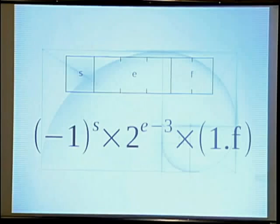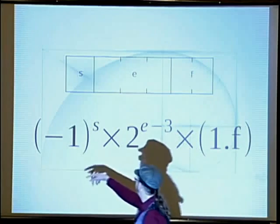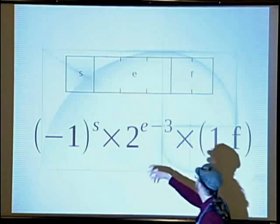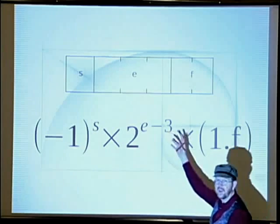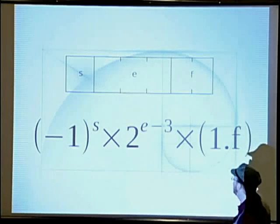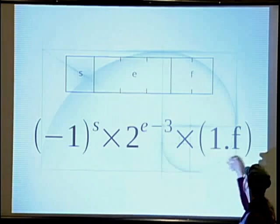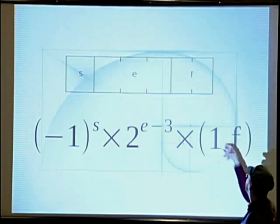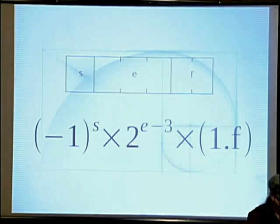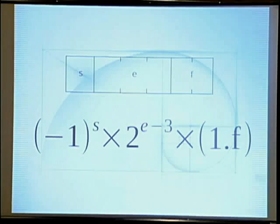The value of this is given by this equation, minus one to the sign bit, or positive or negative. You bias the exponent by, in this case, three. So half of the numbers are less than one. And you take, I mean, this is likely to be a one. And then the fractional part comes from the two f bits. That's what you get if you don't have subnormal floating point numbers.